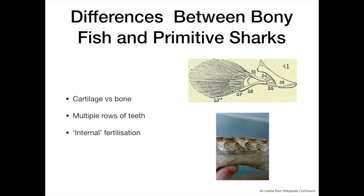There are several important differences between the bony fish, known as teleosts, and the primitive sharks and other cartilaginous fish. The major difference between Chondrichthyes and other fish is the presence of lightweight cartilage instead of bone. The lower density and increased flexibility provided by cartilage has many benefits to the shark, such as increased agility and reduced energy expenditure on buoyancy.